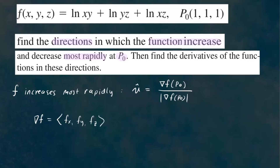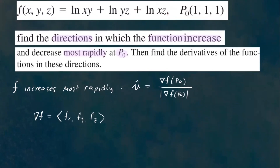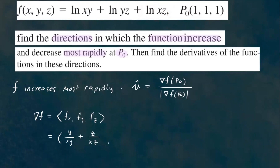We're using this function f of x, y, z. Let's find the partial derivative with respect to x — y and z are treated as constants. The derivative of ln(xy) with respect to x is 1 over xy times the derivative of the inside, which is y. Plus, differentiating the next term with respect to x gives z over xz.